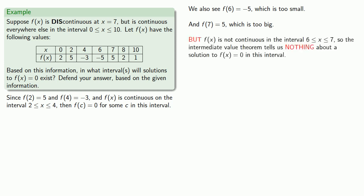But f of x is not continuous in the interval between 6 and 7 because it's discontinuous at x equals 7. And so the intermediate value theorem tells us absolutely nothing about whether or not a solution to f of x equals 0 exists in this interval.